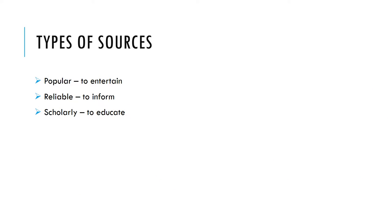What are the types of sources out there? To put it simply, sources fall into three categories: popular, reliable, and scholarly. Let's break these down a little further.